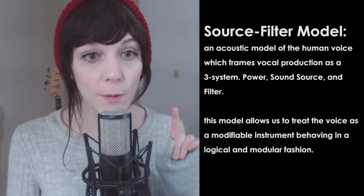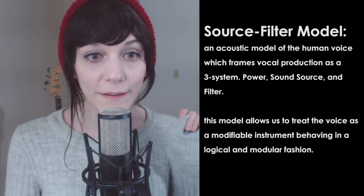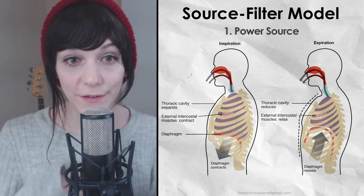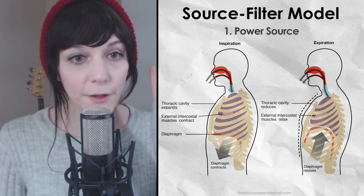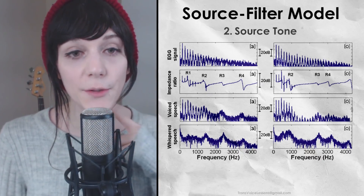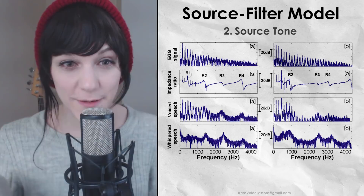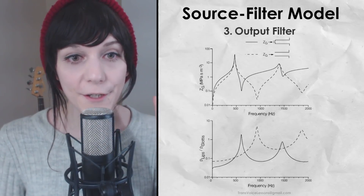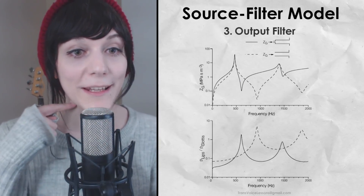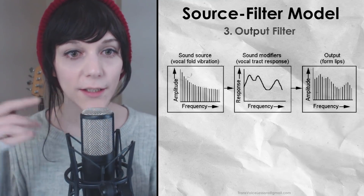First, you have to understand that your voice is split into three parts. You have the power source, which is essentially your airflow. You have your actual source tone, which is the sound that your vocal folds make — you never get to hear this. And then third, the filter, which is what your body actually does to the source sound.